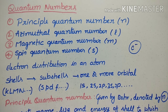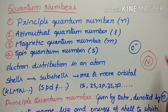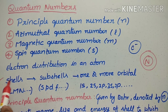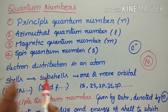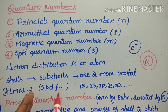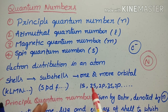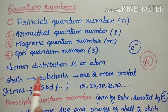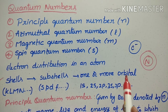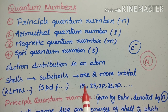Electrons are circulated in circular paths around the nucleus. The electron distribution in an atom is divided into shells; shells are subdivided into subshells, which are designated s, p, d, f, and so on. Subshells are further subdivided into orbitals in which electrons occupy.